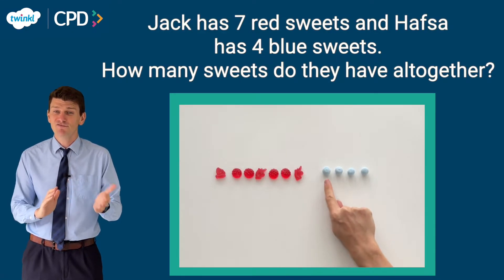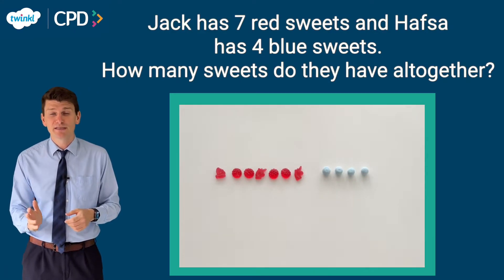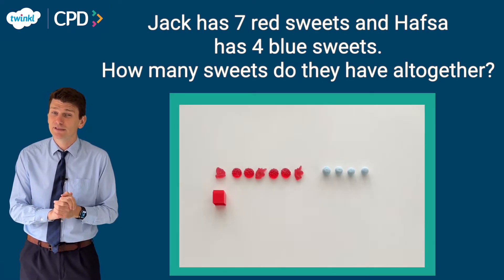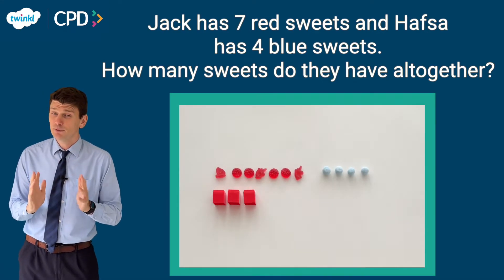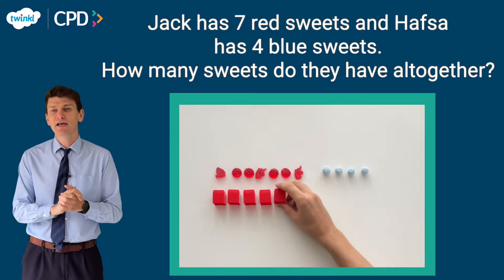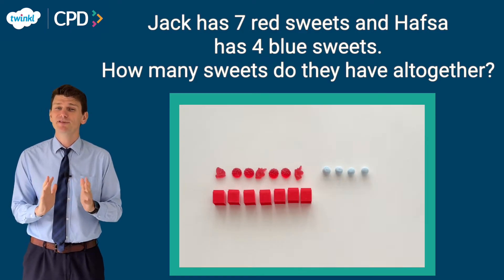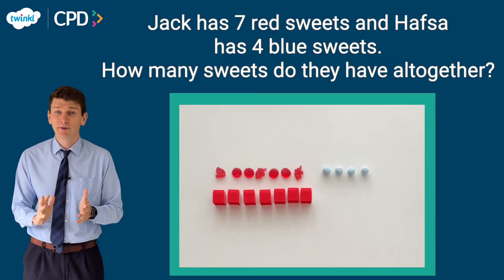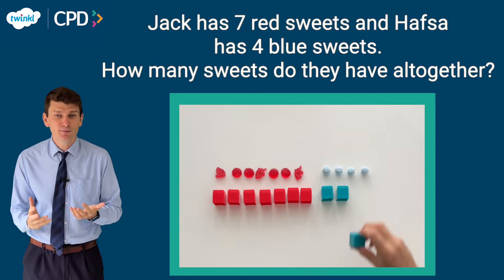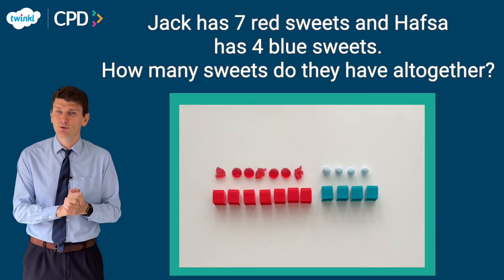So seven red sweets add four blue sweets equals eleven sweets altogether. The next step would be to use manipulatives such as cubes or counters to represent the problem, perhaps replacing the red sweets with red cubes and the blue sweets with blue cubes.